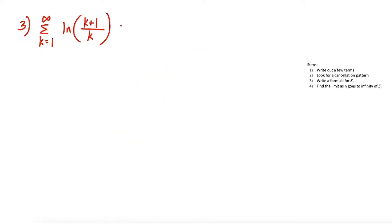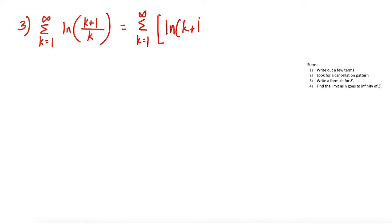For the third question, this one's a little different because we're dealing with a natural log. The move here to get this started is to separate this log into two separate logs so it can take the shape of a telescoping series. We have the summation from k equals 1 to infinity, and we break it into natural log of the numerator, k plus 1, minus natural log of the denominator, k.